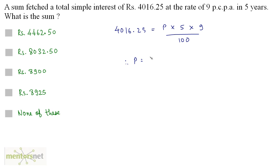So therefore, P equals 4016.25 times 100, which will remove the decimal point. So 401625 by 5 times 9. Dividing the numerator by 5, you get 80325, and this 5 gets cancelled. So we have 80325 divided by 9, and that equals 8925. So the sum is Rs. 8,925. So option D is the correct answer.